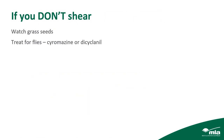If you decide shearing may not be worthwhile, remember to keep an eye on grass seeds and treat for flies. Cyromazine — the active ingredient in Vetricin — and dicyclanil in CLiK are the common fly treatment options. If you're not shearing the lambs, you will have to watch for flies because one or two fly-struck animals will blow the budget pretty quickly.